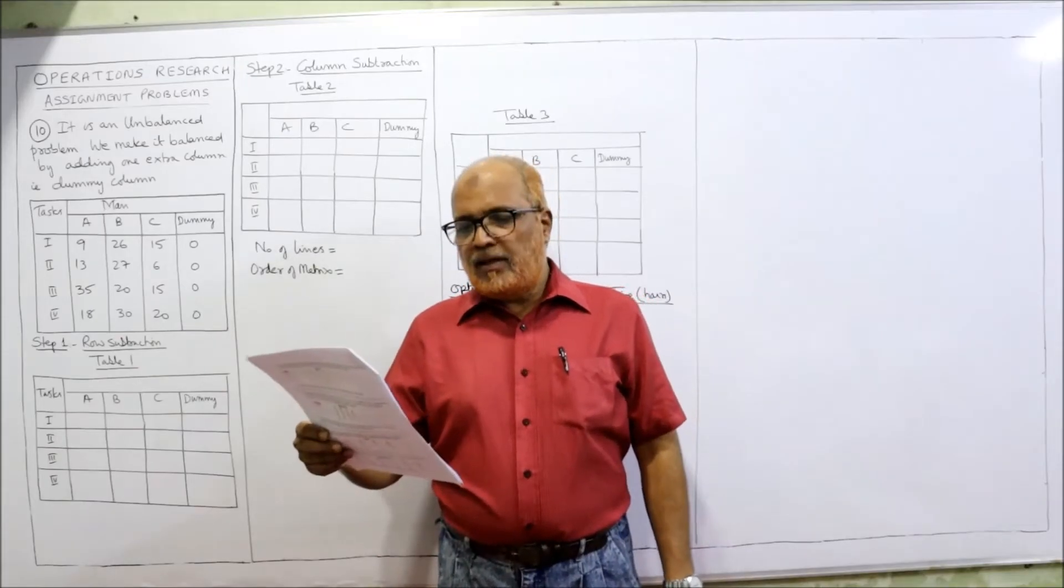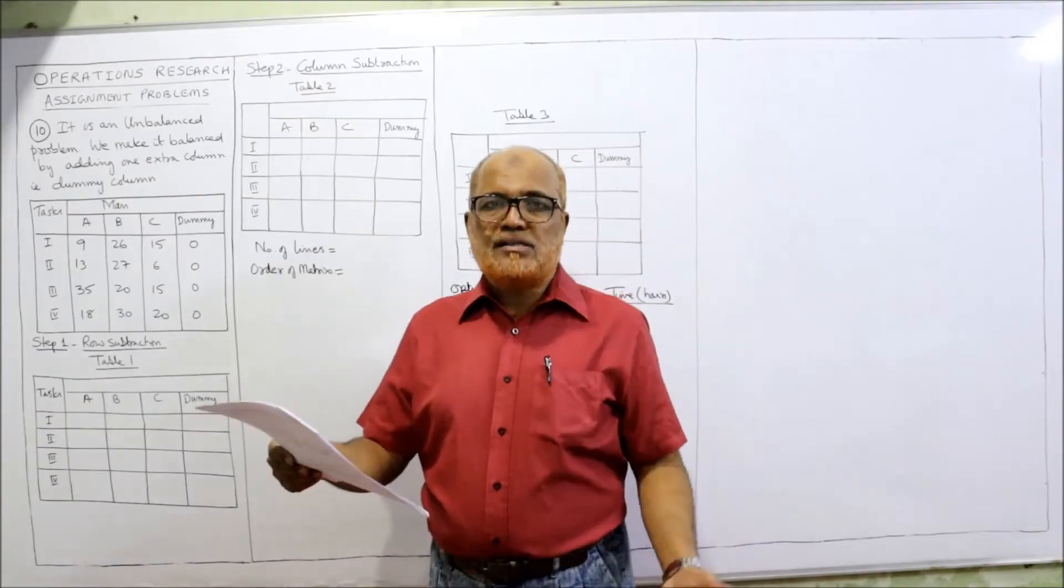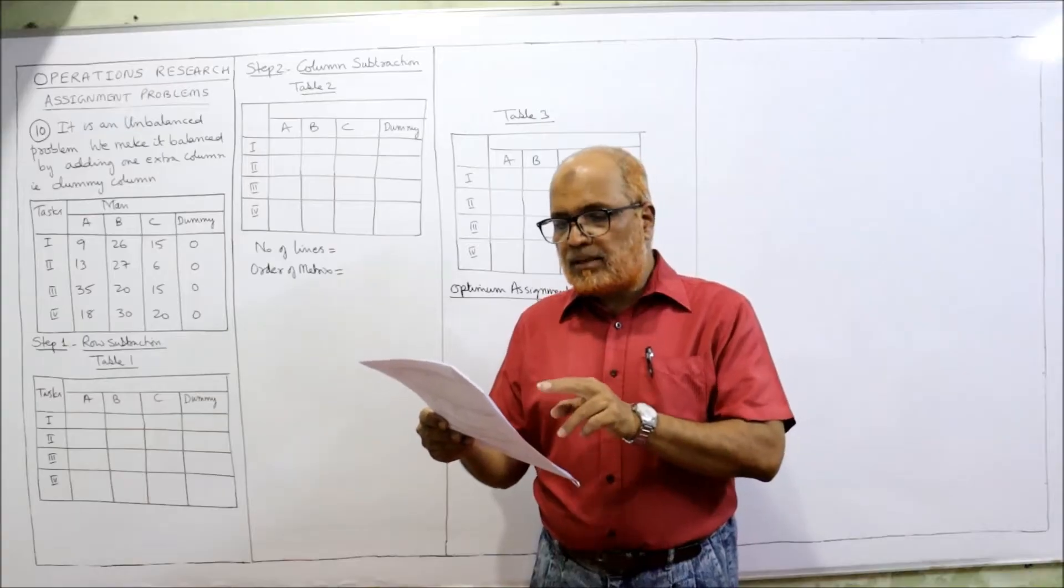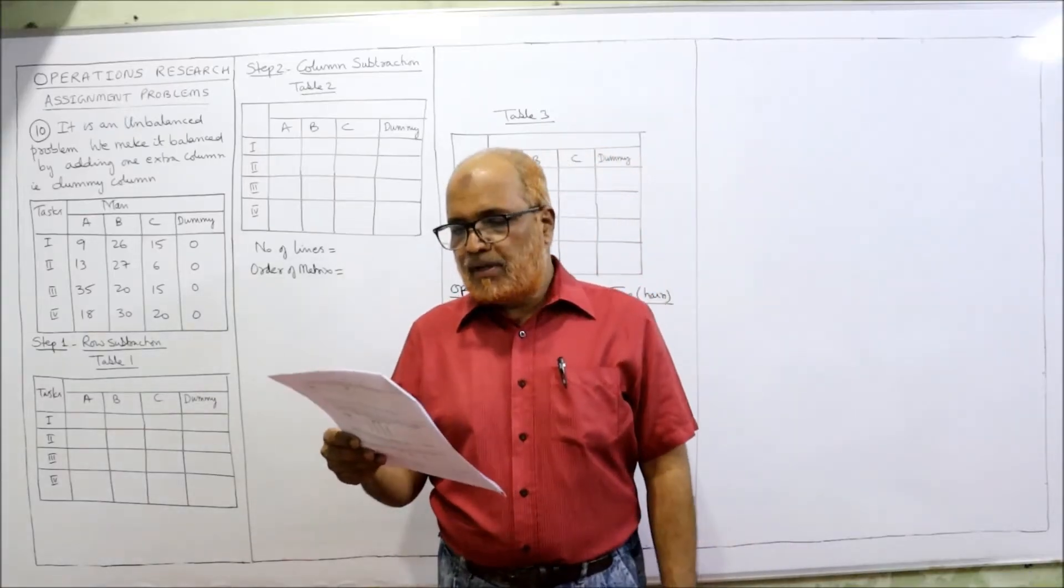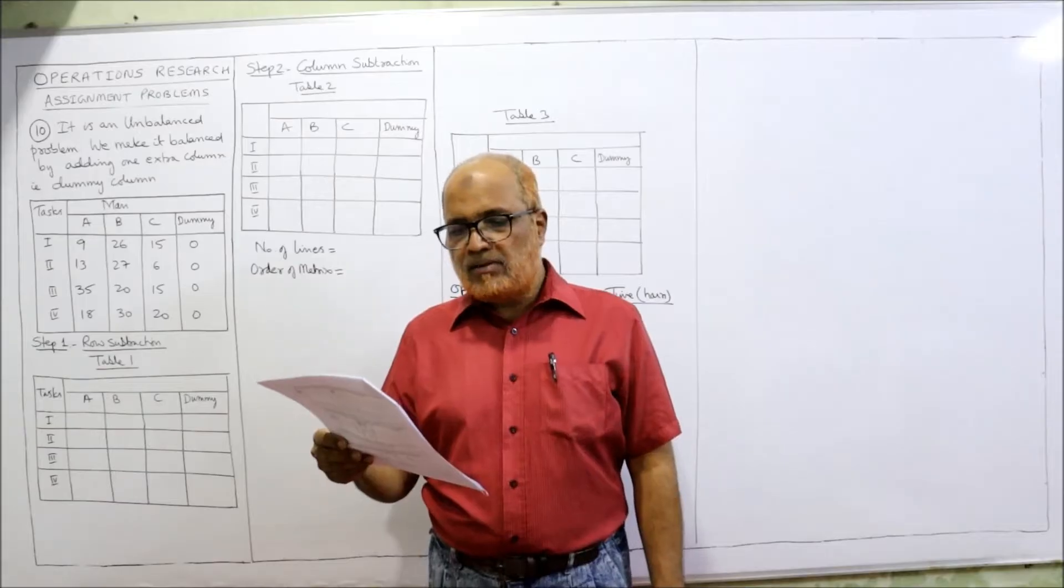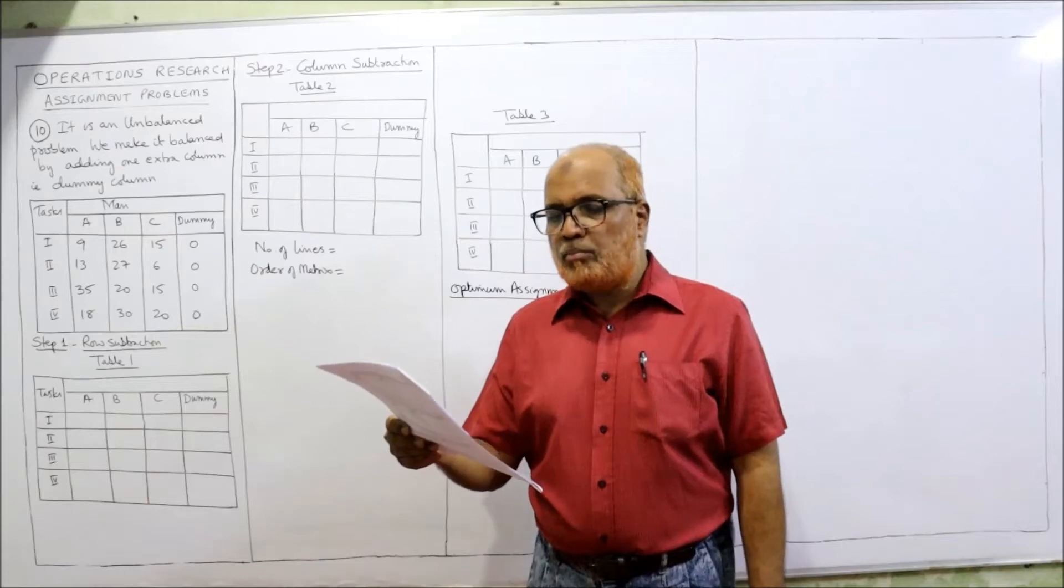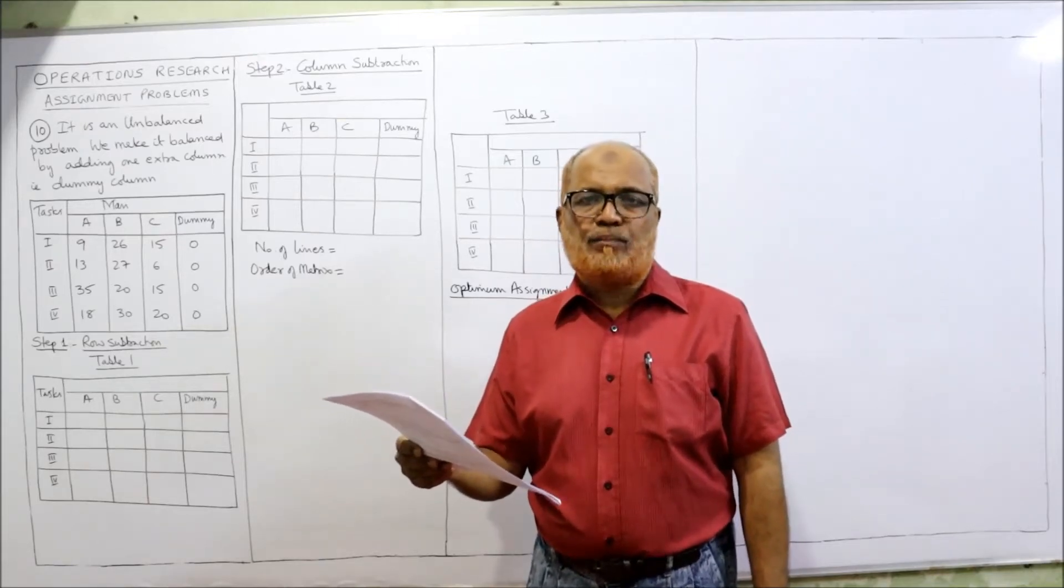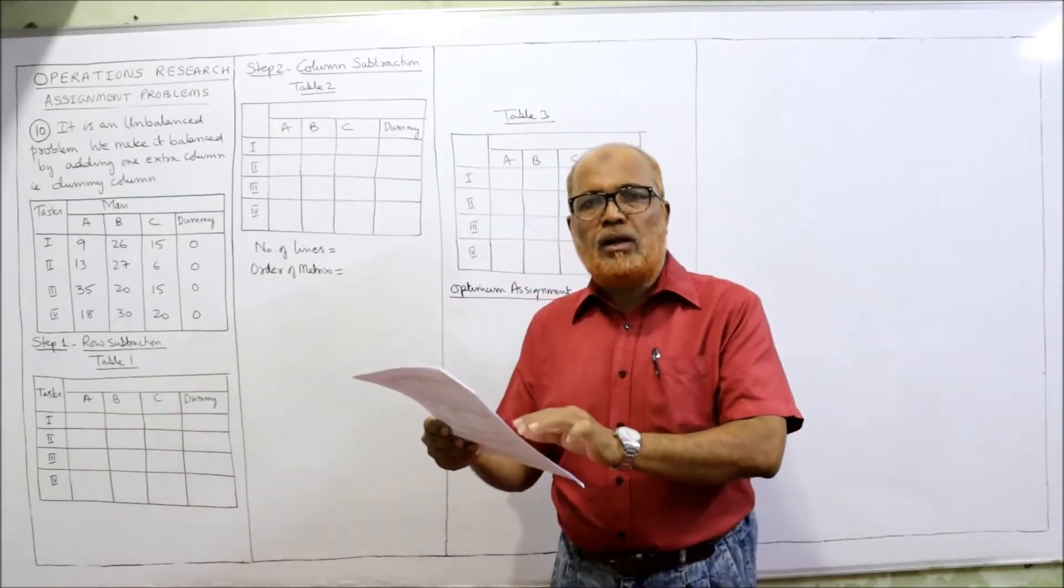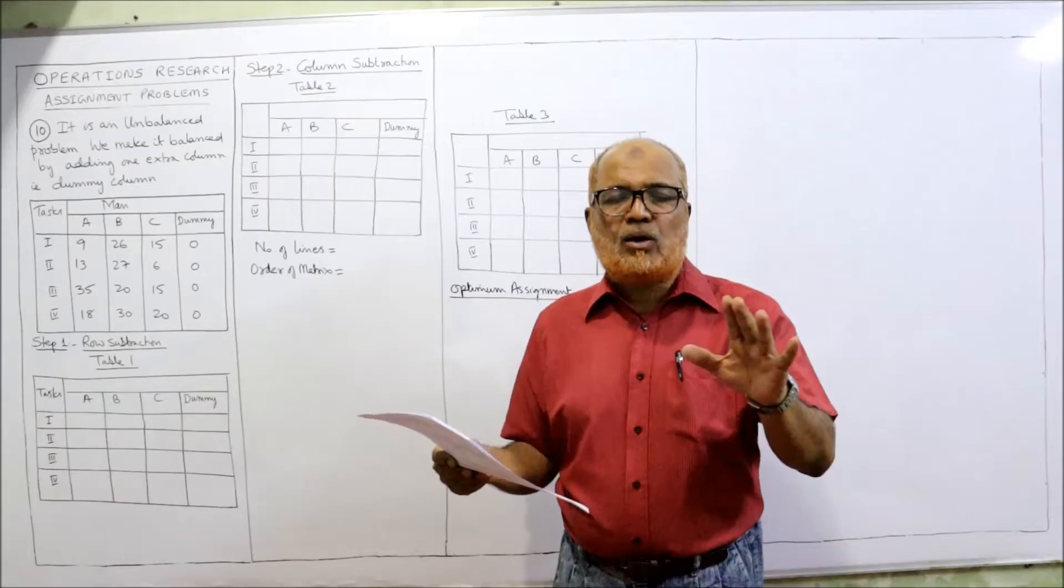See the 10th problem. A department head has 4 tasks to be performed and 3 subordinates. It is an unbalanced problem because 4 tasks means 4 rows are given, but the subordinates are only 3: A, B, and C. The subordinates differ in efficiency. The estimate of the time each subordinate would take to perform each task is given in the matrix. How should he allocate the tasks, one to each man, so as to minimize the total man hours? The problem is very simple; the only thing is it's unbalanced with only 3 columns and 4 rows.